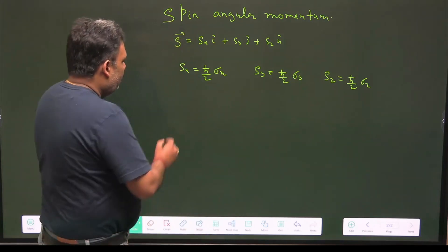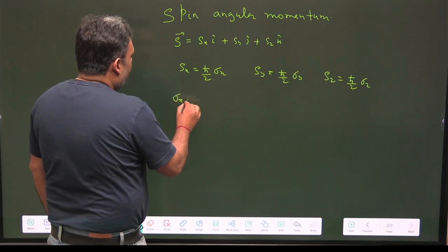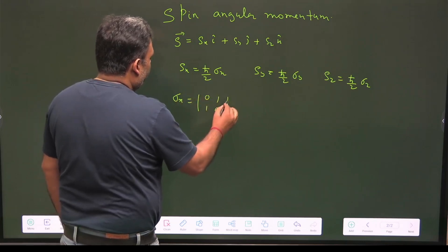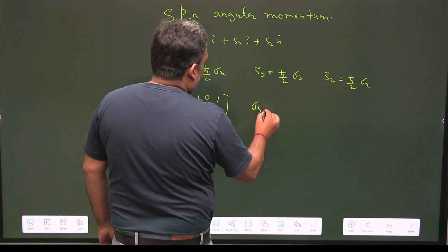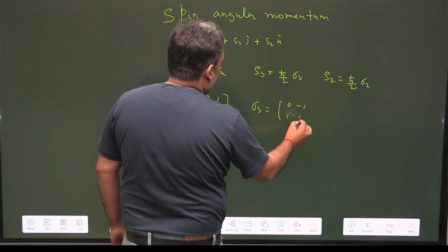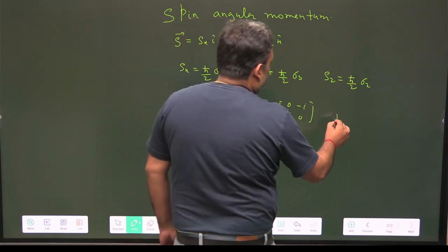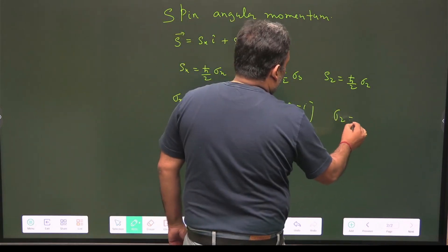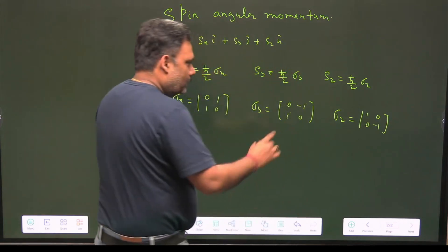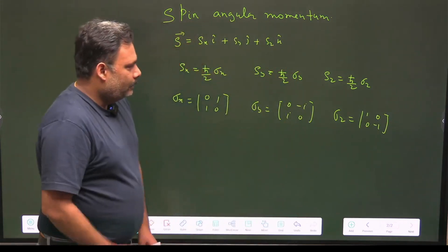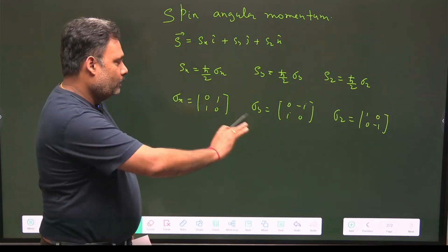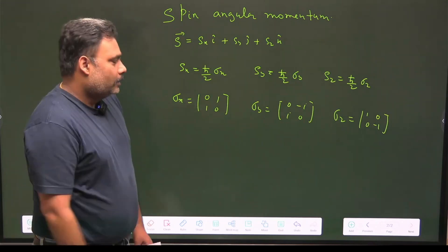The Pauli matrix σx is [0, 1; 1, 0], σy is [0, -i; i, 0], and σz is [1, 0; 0, -1]. These are the three Pauli spin matrices defined for the spin-half particle.